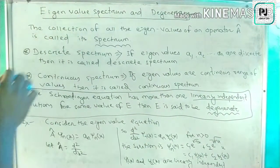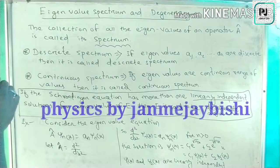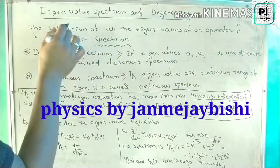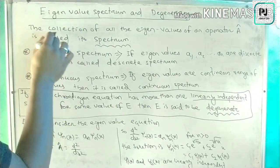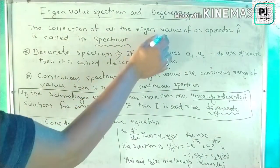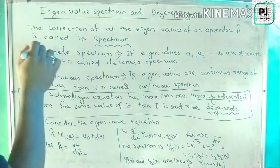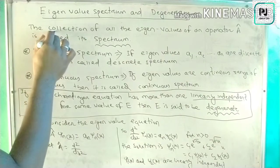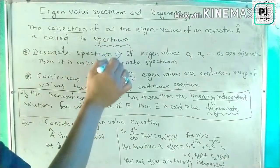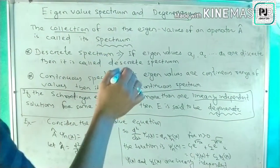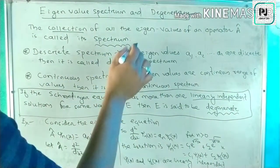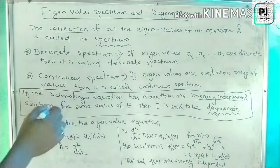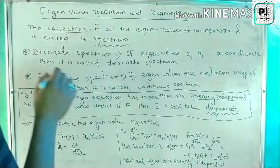What is the eigenvalue spectrum and degeneracy? First we have to know what is the eigenvalue spectrum. The collection of all the eigenvalues of operator A is called the spectrum. So we have the collection of all the eigenvalues — these are the numbers we get from operator A.